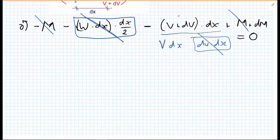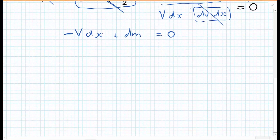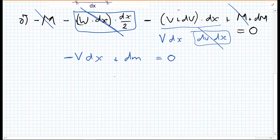Rearranging the terms that we have left over now, we have minus V dx plus dM equals 0. I'll take the dM to the right-hand side, so I get minus V dx equals minus dM. I can multiply both sides by minus 1 to make it positive.